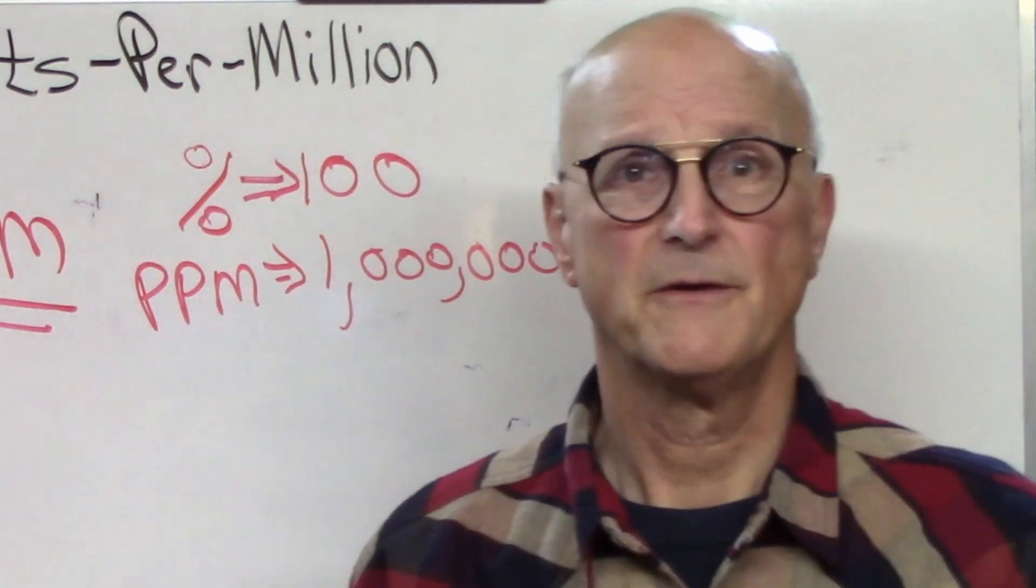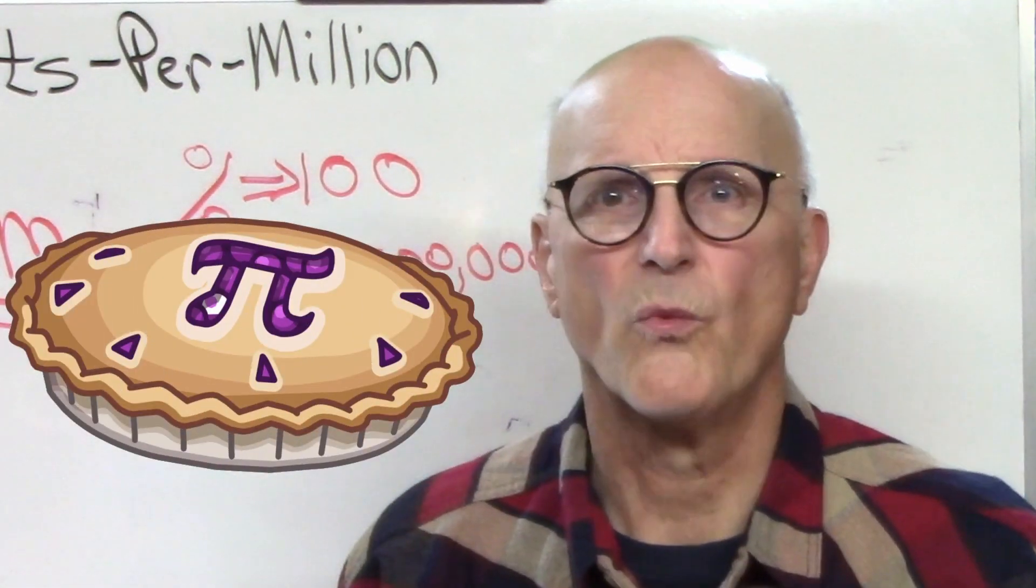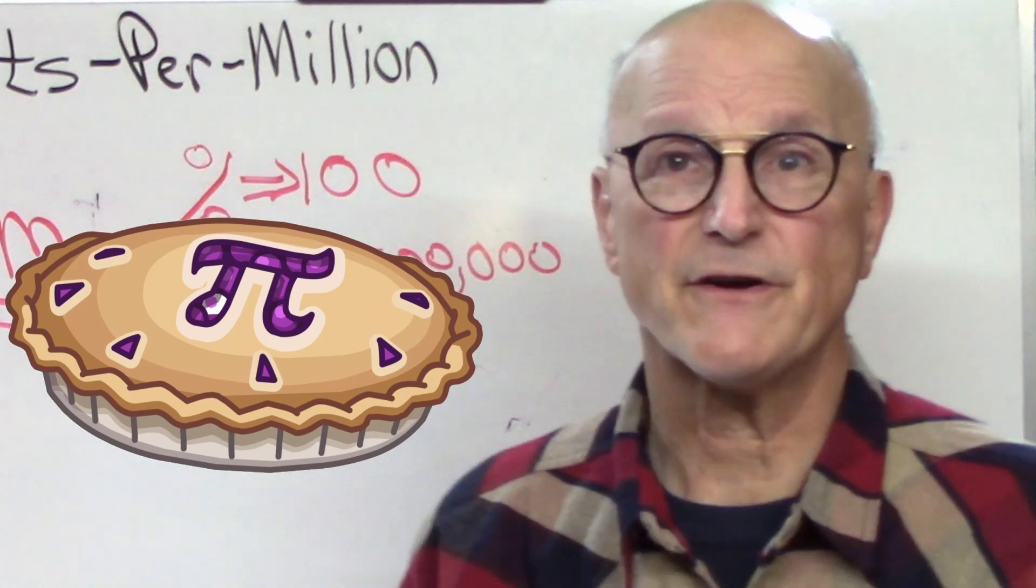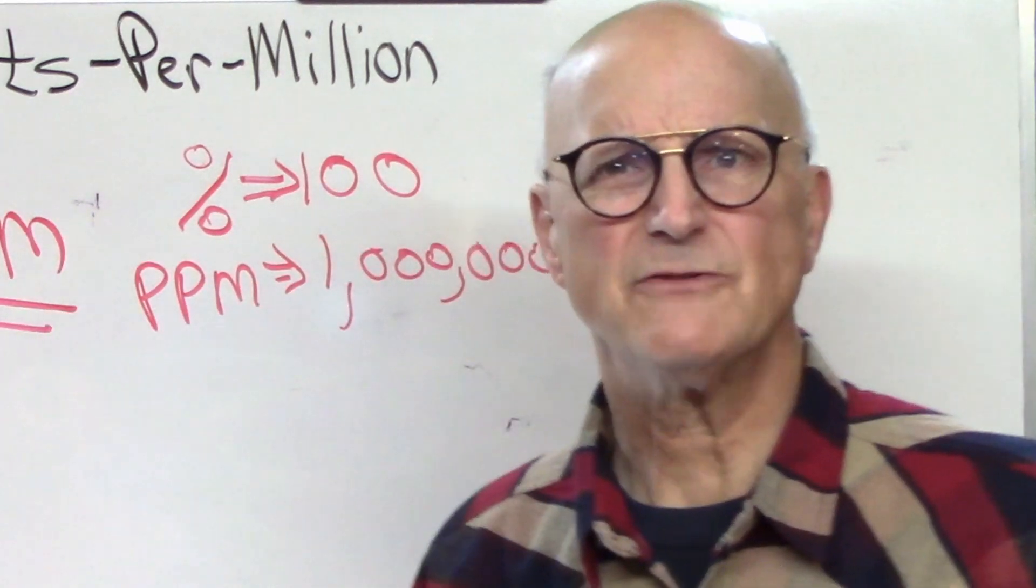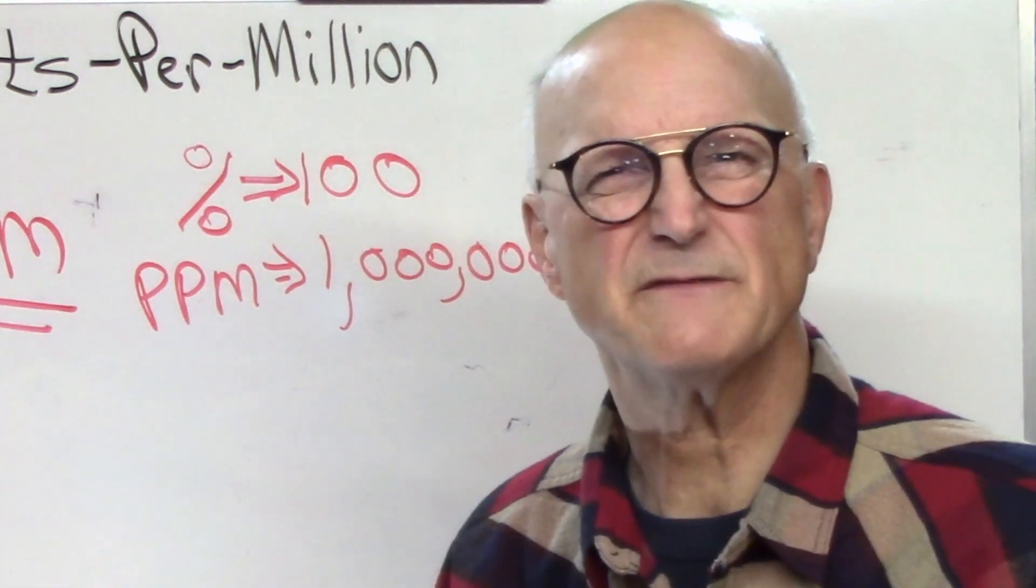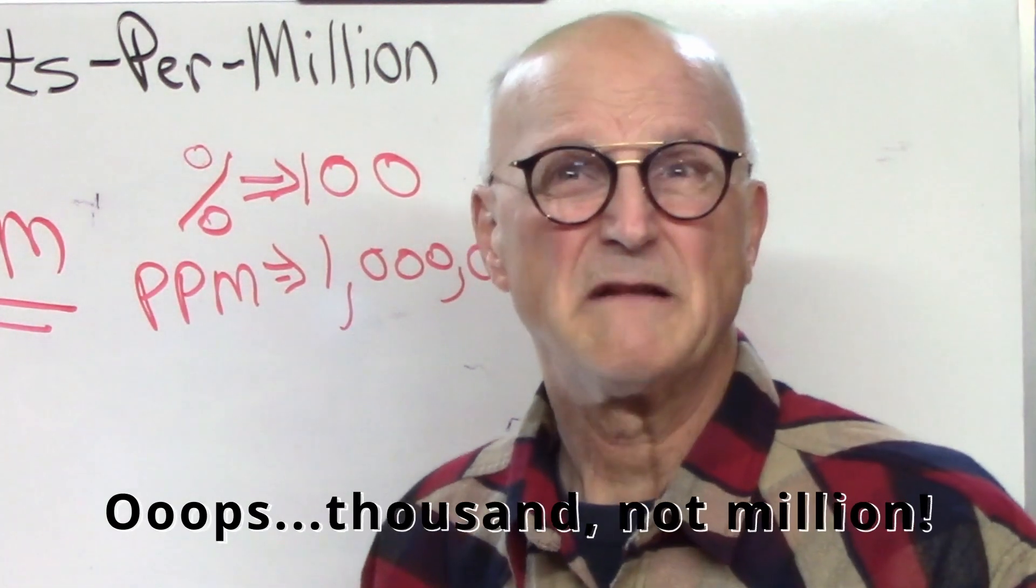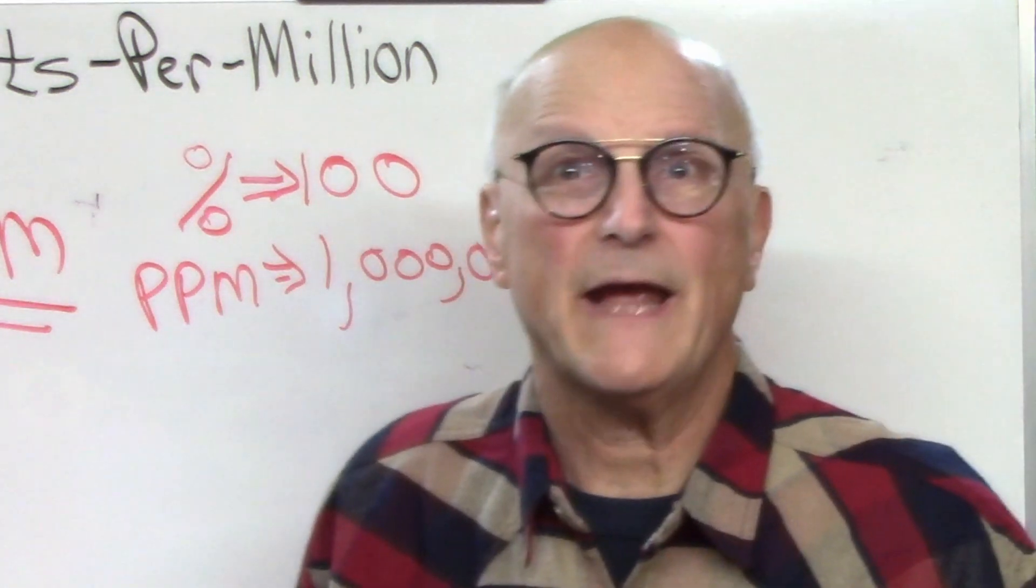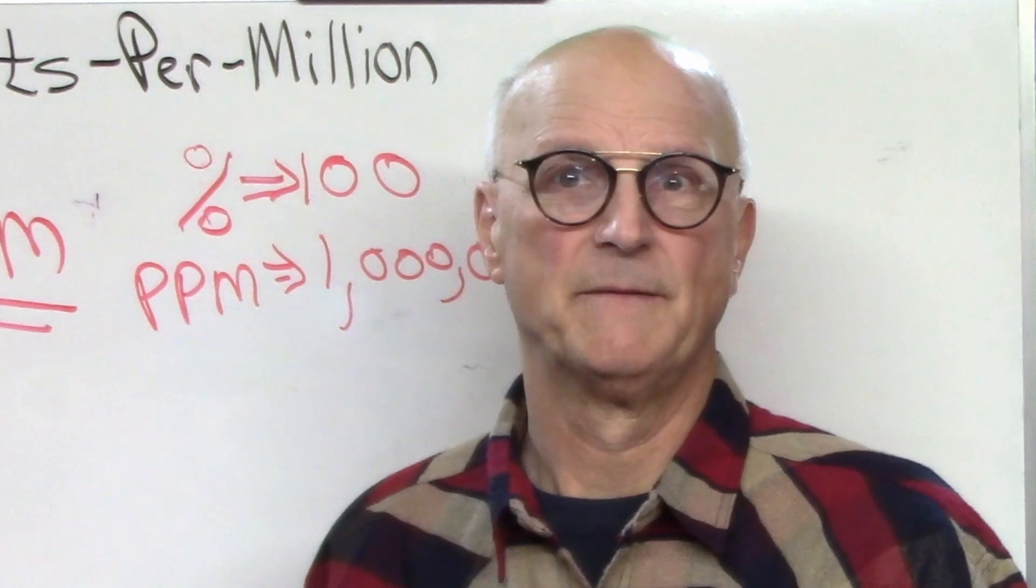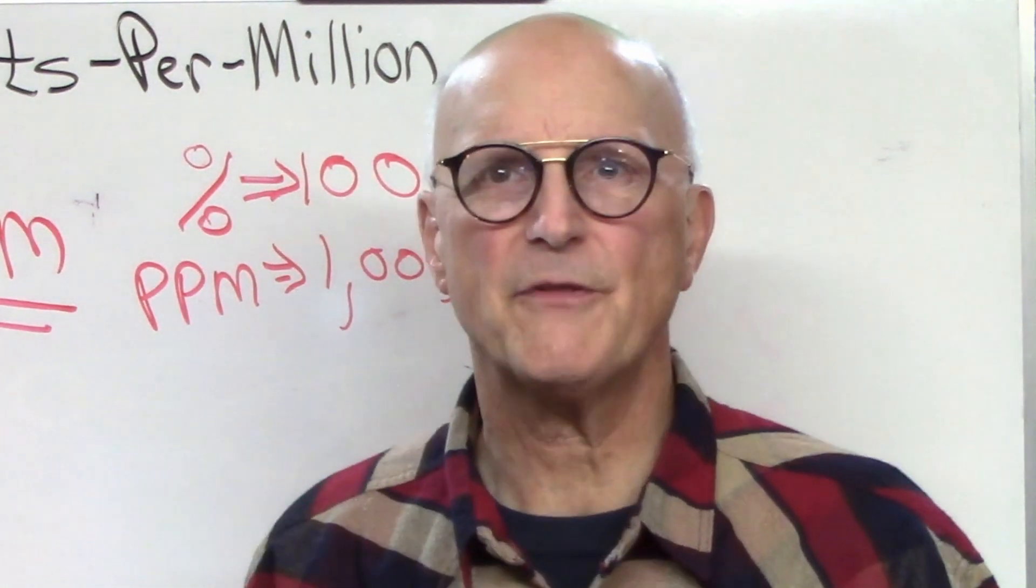Parts per million. So if I had that same pie, and I cut it up into 1 million pieces, and then ate 500,000 pieces of pie, boy, it sure sounds like I ate an awful lot of pie, doesn't it? 500,000 pieces of pie? But each piece was only 1/1,000,000th of the pie. I still only ate half of the pie. This would be 500,000 parts per million of the pie.